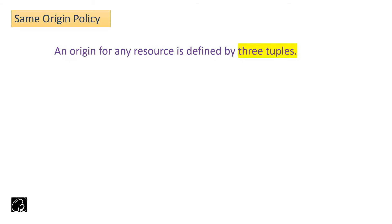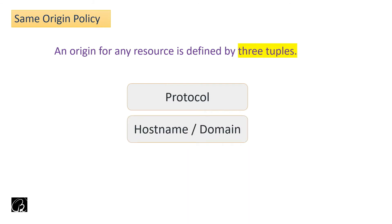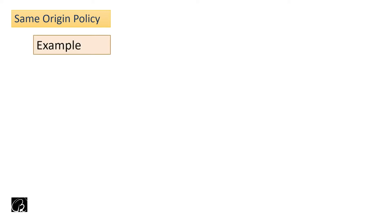Let us look at a policy called the Same Origin Policy — this is where we will understand the term 'origin.' It says an origin for any resource is defined by three tuples: number one, the protocol, like HTTP or HTTPS; number two, the hostname or domain, like facebook.com or flipkart.com; and number three, the port number, which identifies a specific process running on that server.